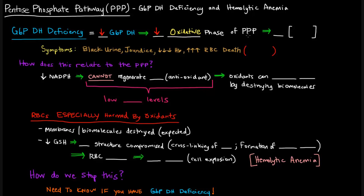The non-oxidative phase creates R5P without creating NADPH. So if we don't have G6P dehydrogenase, we could still create R5P in the non-oxidative phase, but as far as NADPH goes, we're probably going to have low levels of NADPH.